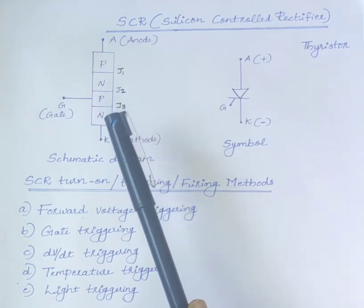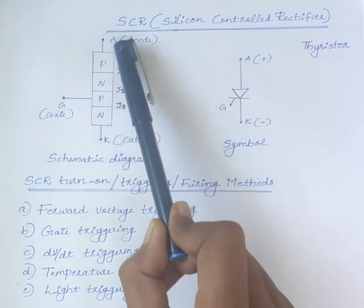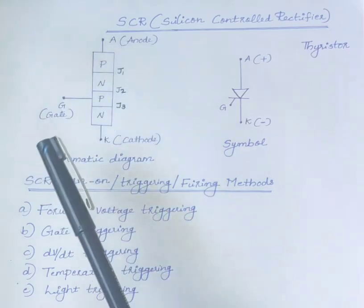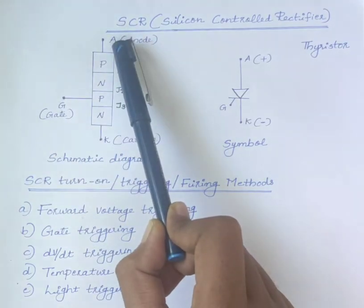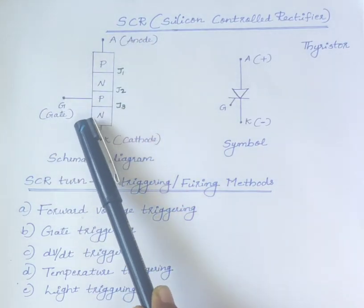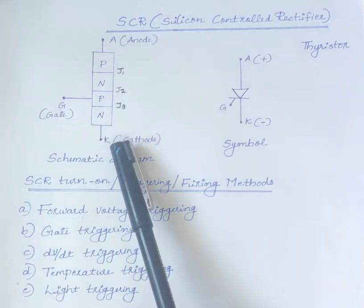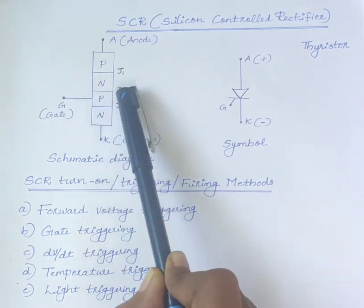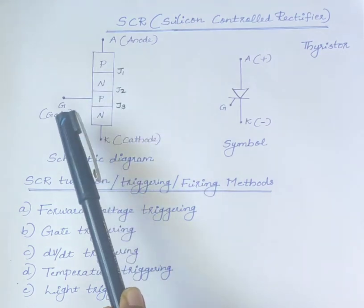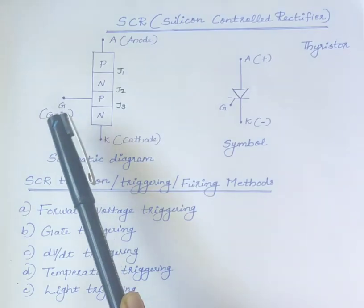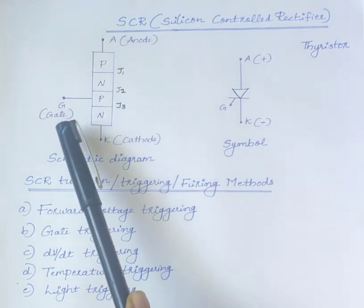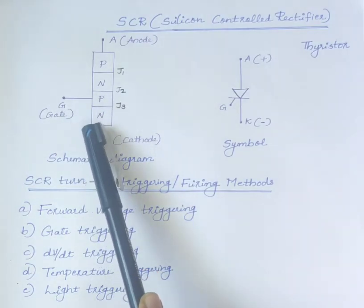The terminal connected to the outer P-layer is known as anode and the terminal connected to the outer N-layer is called cathode and that connected to the inner P-layer is called gate. Gate terminal is usually kept near the cathode terminal.